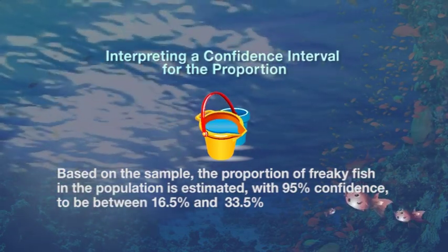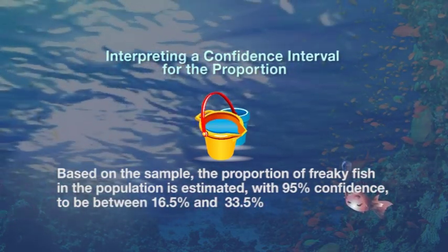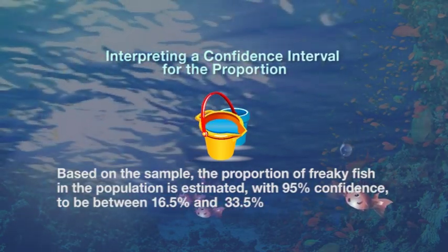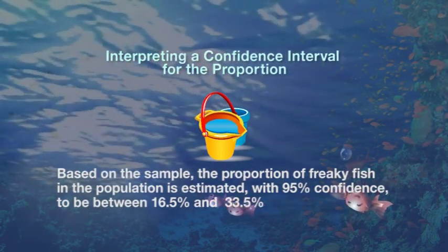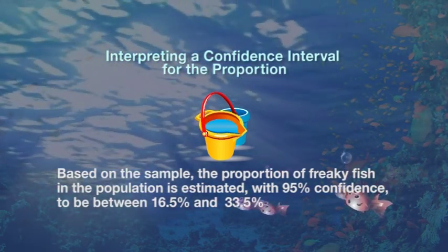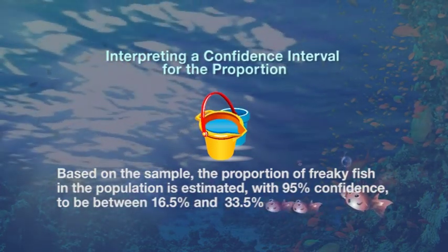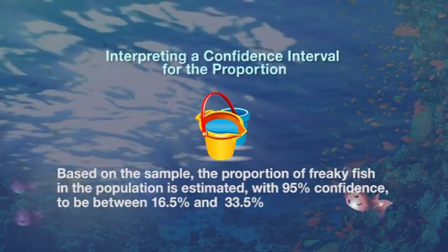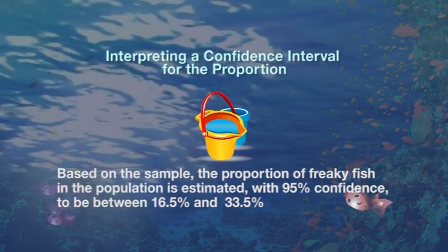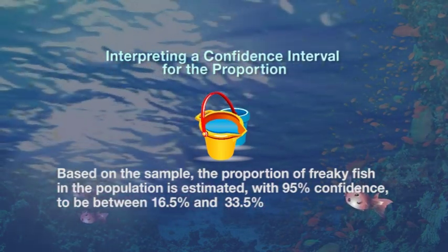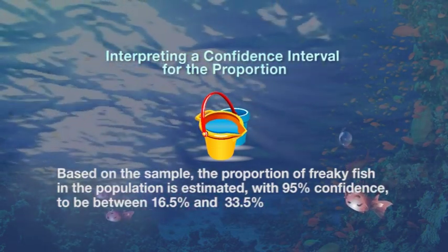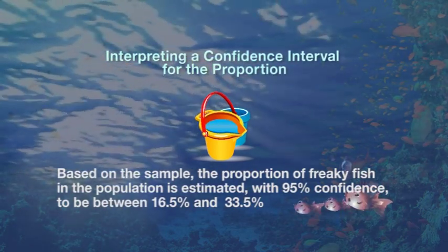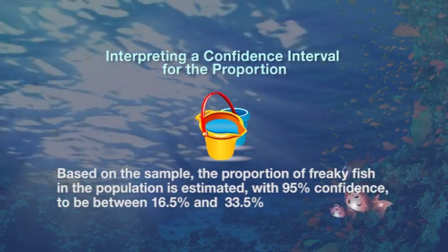Having taken just one sample where 25% of the fish in the bucket were freaky, we've been able to estimate that between 16.5% and 33.5% of all the fish in the population — meaning all the fish in the pond — are freaky. Somewhere between there is the true answer for the population proportion of freaky fish, but we're only 95% confident that the true proportion lies between those two limits.